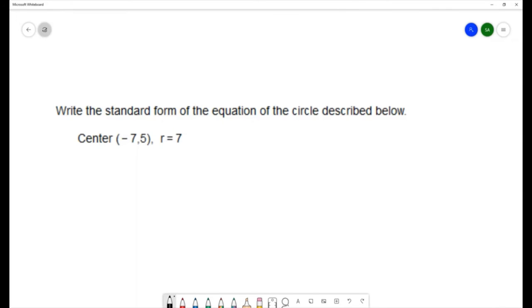We need to know the standard form of a circle. The standard form of a circle is (x - h)² + (y - k)² = r², where h and k are the coordinates of the center of the circle and r is the radius.